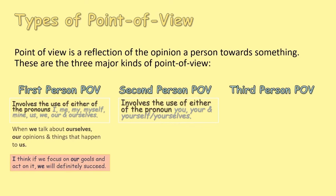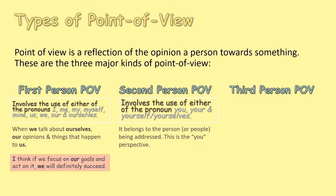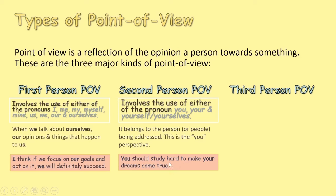Next is the second person point of view. It involves the use of pronouns: you, your, yourself, or yourselves. Here, the speaker has a direct person being addressed. It belongs to the person or people being addressed — this is the 'you' perspective. Example: 'You should study hard to make your dreams come true.' In this point of view, it is clear that the speaker has someone they are directly talking to. It can be one, two, or more persons being addressed.